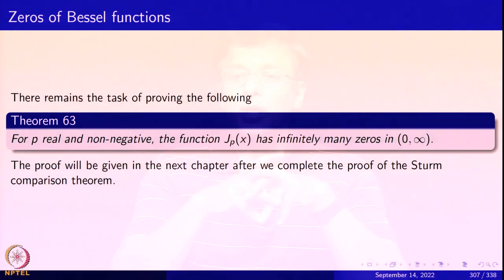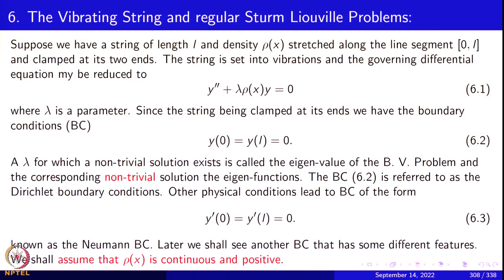Hello. Let us continue with the third part of this course on generalized Fourier expansions with respect to various complete orthogonal systems in Hilbert spaces. In this chapter, one last bit was missing: the zeros of Bessel's function. We still need to show that if p is real positive, j_p(x) has infinitely many zeros in the positive real line. We have proved these zeros are simple, but we still need to show there are infinitely many. The proof will be given in the next chapter after the Sturm comparison theorem. Now we turn to Chapter 6, which discusses the vibrating string and regular Sturm-Liouville problems.